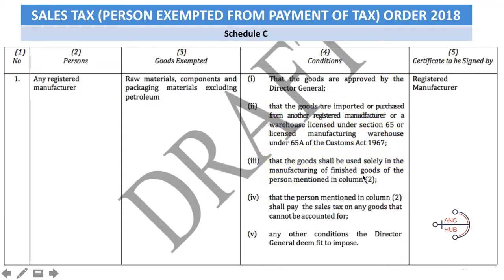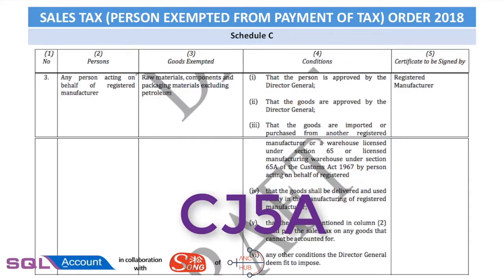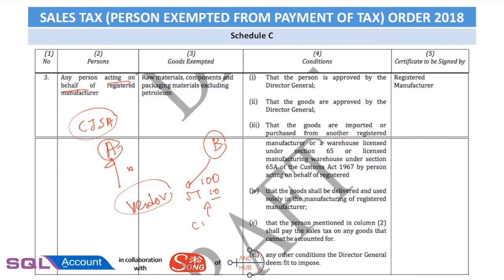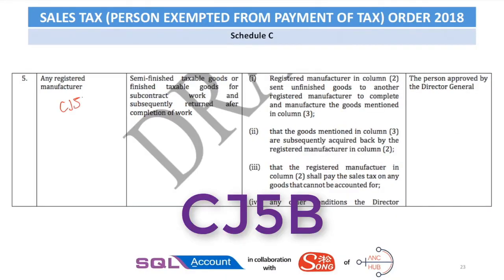Or the goods are purchased from a warehouse licensed under Section 65, a Licensed Manufacturer Warehouse (LMW), and those goods are solely used in the manufacture of finished goods. If all these conditions are fulfilled, you can apply through the MySST portal. Exemption number 3, also known as CJ5A, covers the scenario where a vendor acting as a middleman buys from one party and sells to another. When the vendor sells on, they cannot charge sales tax, so they can apply for CJ5A to cancel off the 10% sales tax.